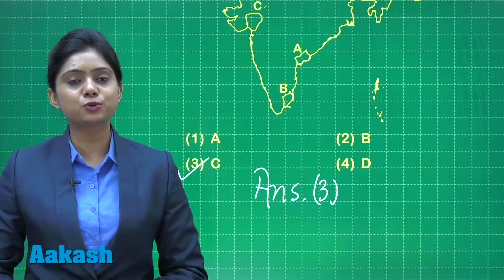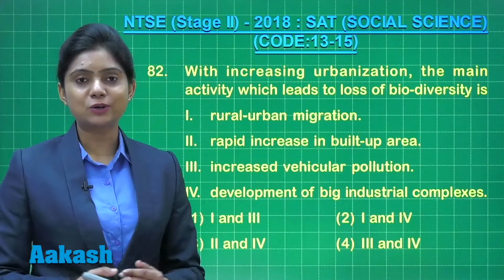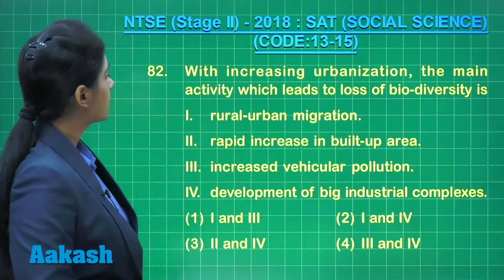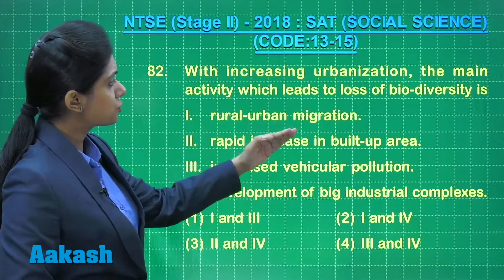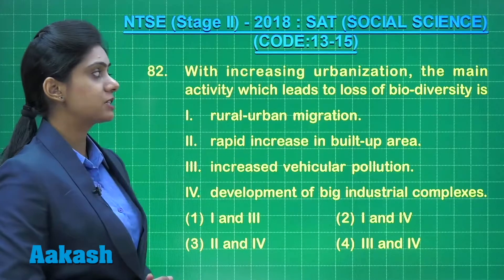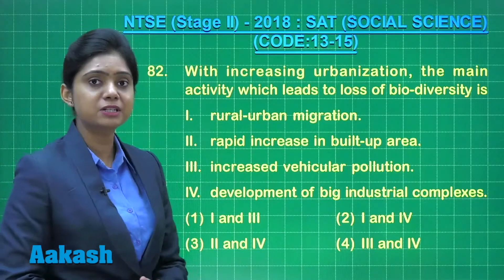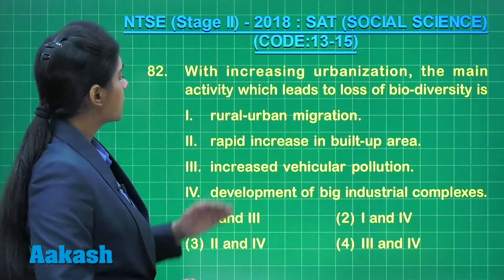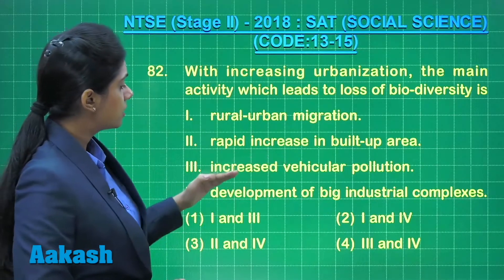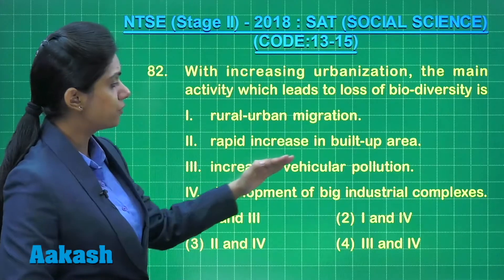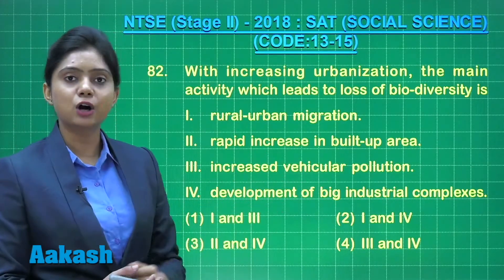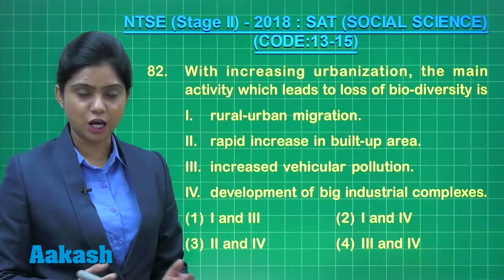That is question number 82. With increasing urbanization, the main activity which leads to loss of biodiversity is — let's see the statements: rural-urban migration, rapid increase in built-up area, increased vehicular pollution, and development of big industrial complexes.